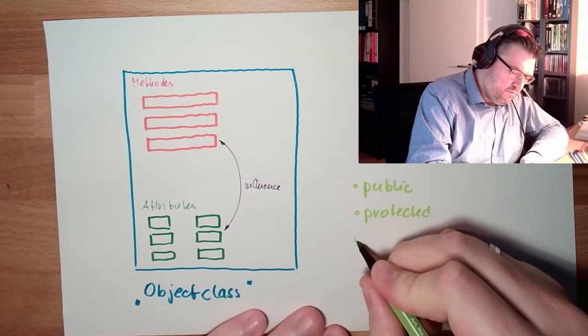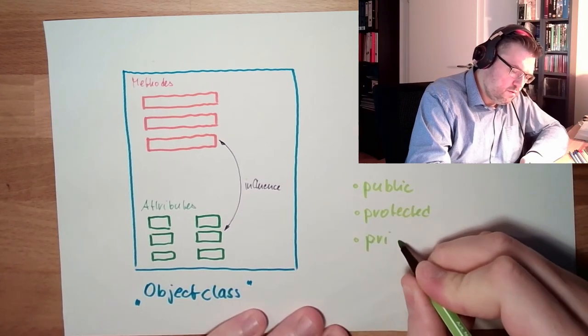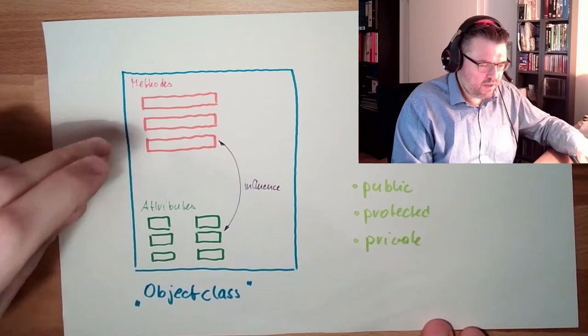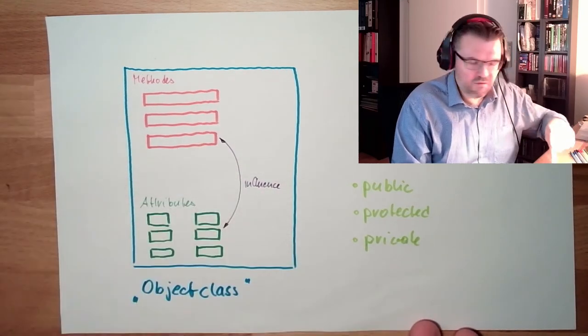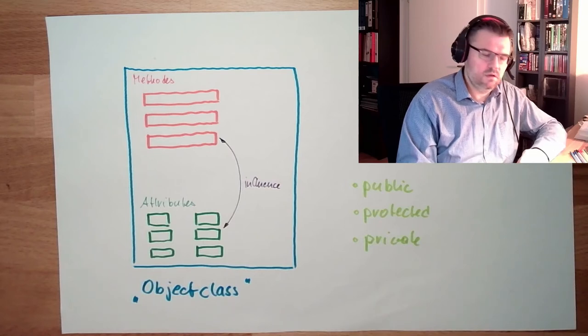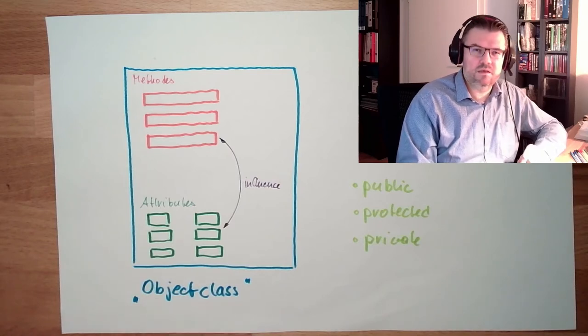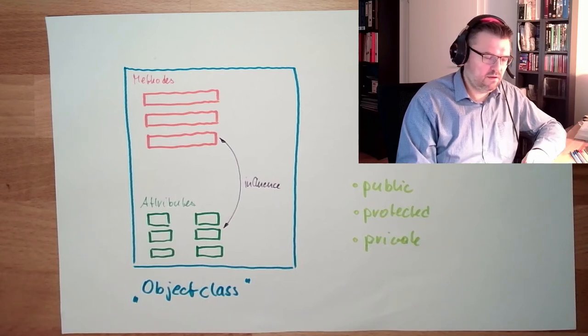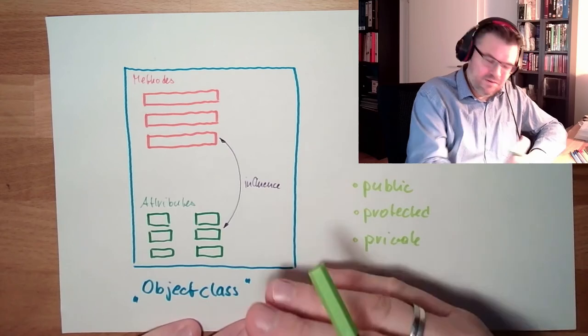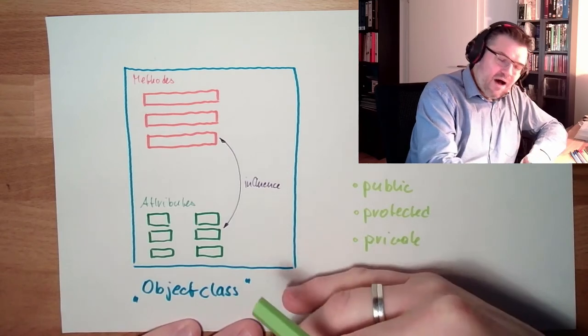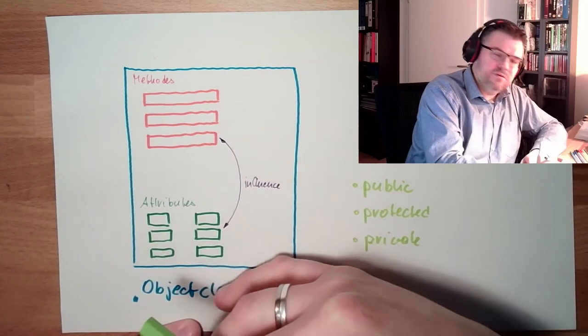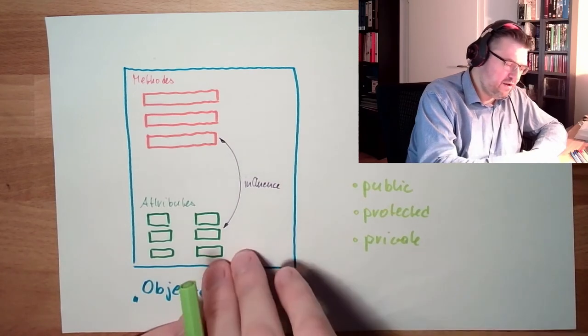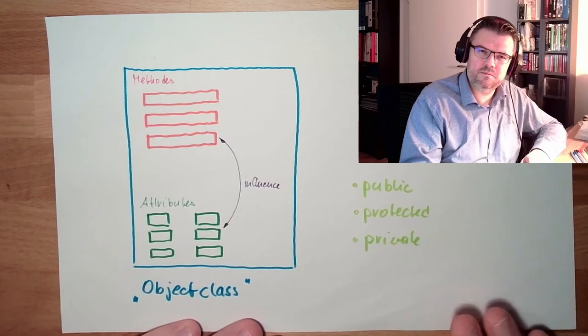Then there is private. Private attributes and methods can only be used by objects of this class. Not even my kids are allowed to look into my private parts. Ah, now I said already something. Okay. Derived object classes are not allowed to look into private attributes, private methods and so on. There is a certain borderline. This is private. If I define an attribute private, it's exclusively for me.